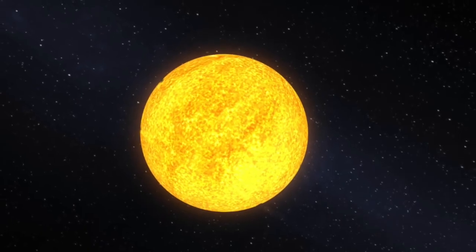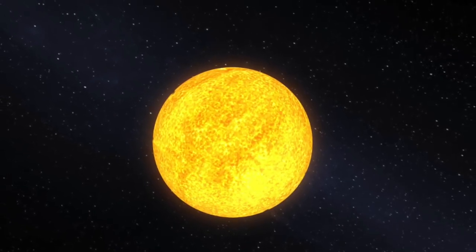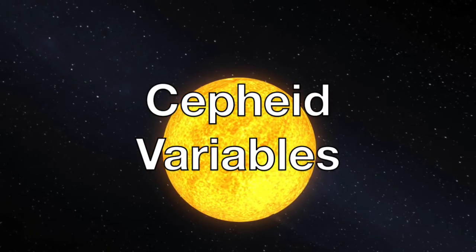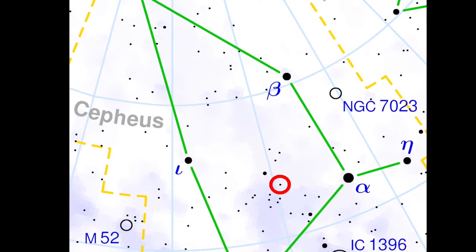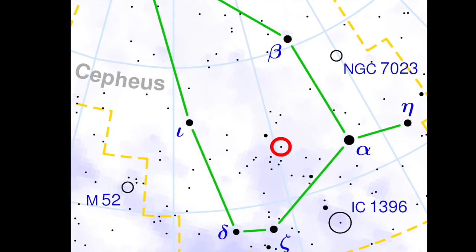Leavitt's discovery was based on a small, relatively unknown group of stars known as Cepheid Variables. These stars are called variables because their brightness changes over time, and Cepheids because the first one discovered was in the constellation Cepheus.